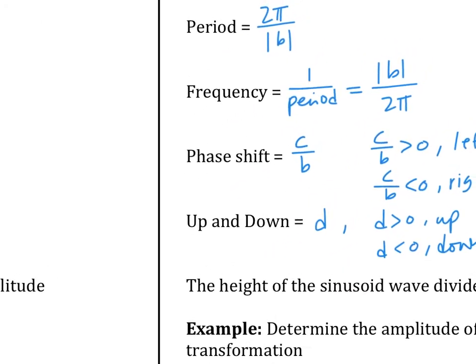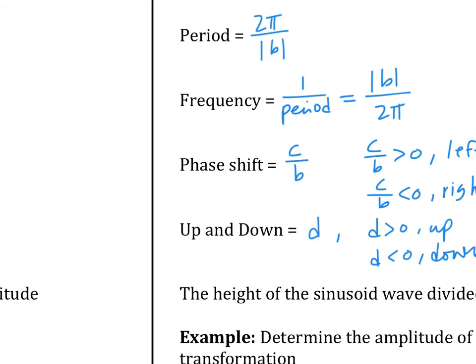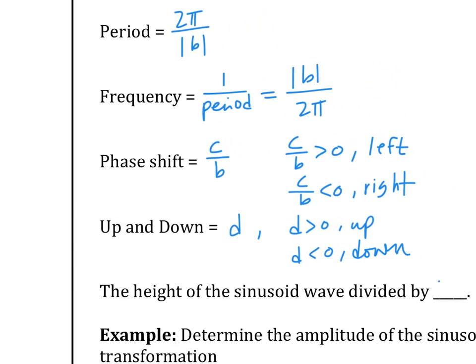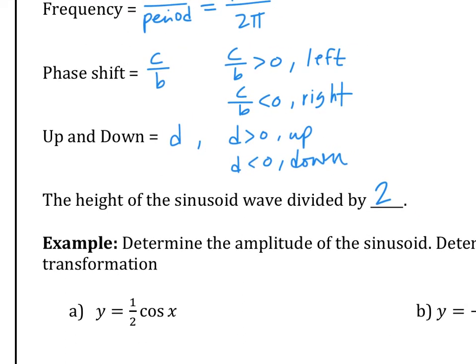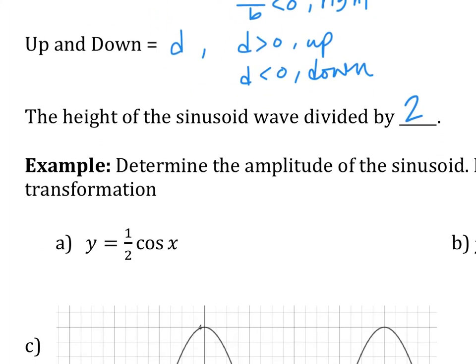So just to review: amplitude is the height of the sinusoid wave, or total height divided by two if you can't figure it out from the graph. Let's do some practice together — determine the amplitude of the sinusoid and then determine the transformation. For A, the amplitude is the absolute value of A, which is one half — the number in front of the function.